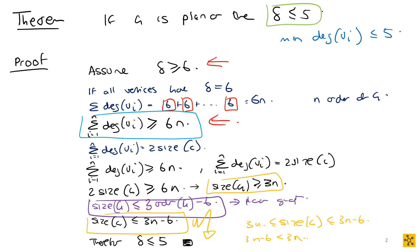We substitute using the handshaking lemma: the sum of degrees equals 2|E|, so 2|E| ≥ 6n, meaning |E| ≥ 3n. But from planar graph theory, |E| ≤ 3n − 6. Since |E| cannot be both ≥ 3n and ≤ 3n − 6, we have a contradiction, and therefore delta must be less than or equal to five. Done.